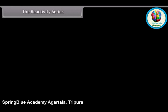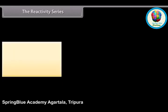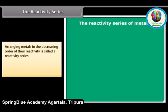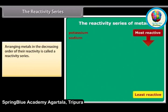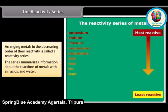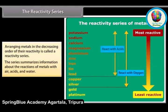The reactivity series. Metals being arranged in the decreasing order of their reactivity is called a reactivity series. It is used to summarize information about the reactions of metals with air, acids, and water.